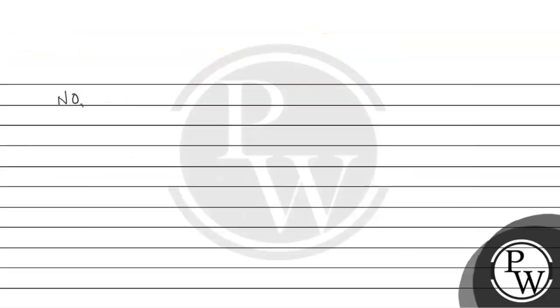Paramagnetic gases क्यों? क्योंकि दोनों के पास unpaired electrons हैं। अगर हम NO2 की बात करें, तो NO2 के पास one unpaired electron है। और O2 की बात करें, तो O2 के पास two unpaired electrons हैं।